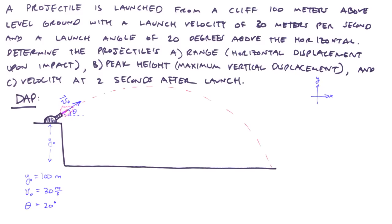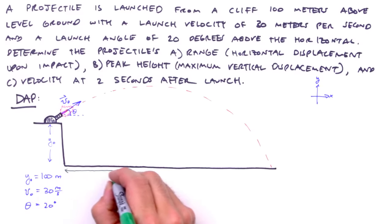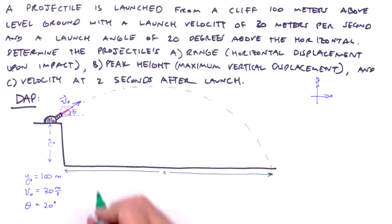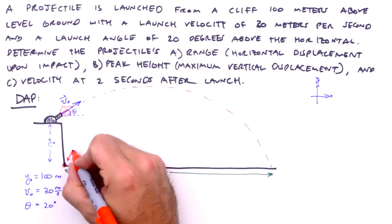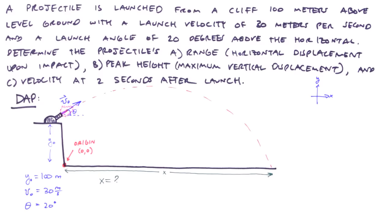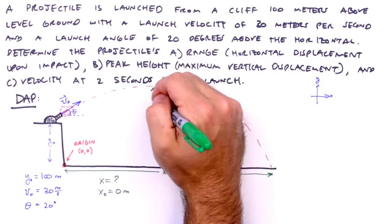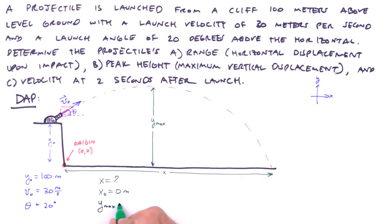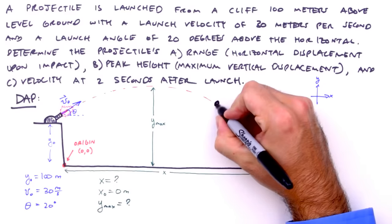So there are some of our knowns — there are a few more that are implied and we'll address them shortly. The first unknown we're tasked with determining is the projectile's horizontal displacement upon impact, its range. We'll label this x, and by doing so we've implied the location of the origin, so let's indicate that on our picture. Now it should be clear to see that our projectile's initial position along the x-axis is 0 meters. We'll label the maximum vertical displacement, that is to say our peak height, as y max. Lastly, we're looking for the projectile's velocity two seconds after launch — we're going to guess that the projectile, a cannonball in this case, would be somewhere around here at that time.